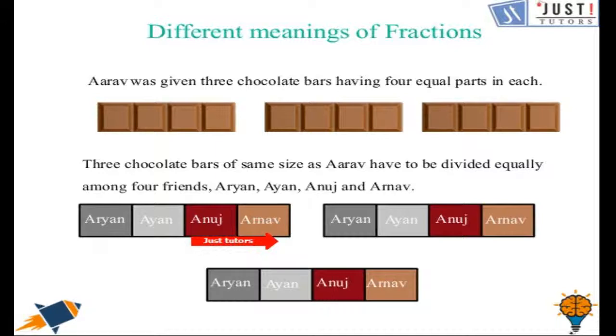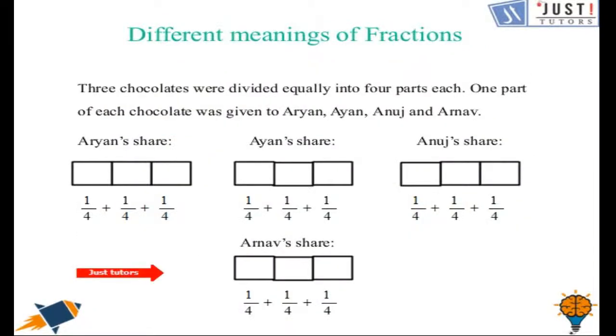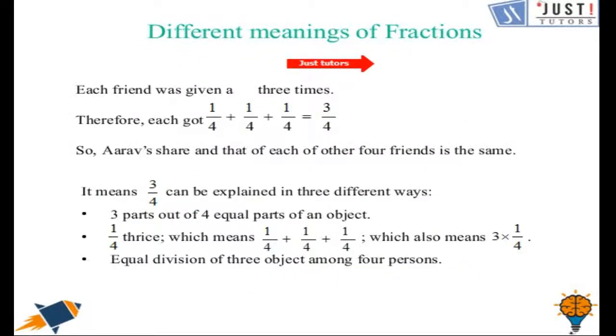Now let's see the share of each friend. Aryan has got 1 quarter of the 1st bar, 1 quarter of the 2nd bar, 1 quarter of the 3rd bar. And the share of other friends are also same. Which means that each friend was given 3 times.